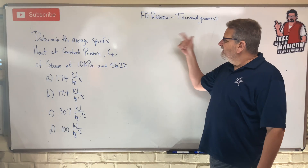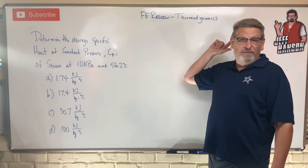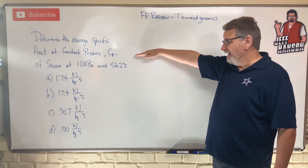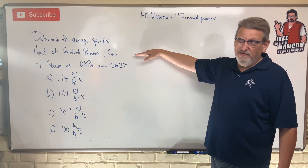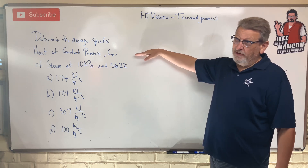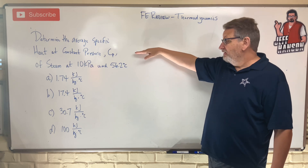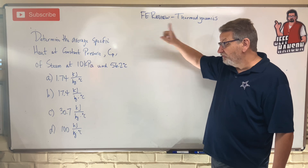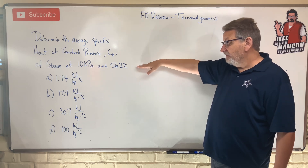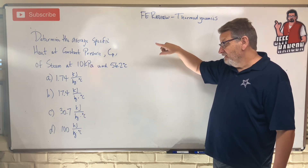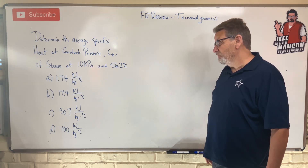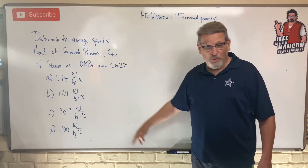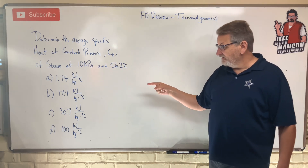Welcome back. FE review problem — thermodynamics. Determine the average specific heat at constant pressure. Specific heat is the amount of heat it takes to raise one gram one degree Celsius. We need to find cp of steam at 10 kPa and 56.2 degrees Celsius. Determine cp — here are your choices. Which one are you selecting?